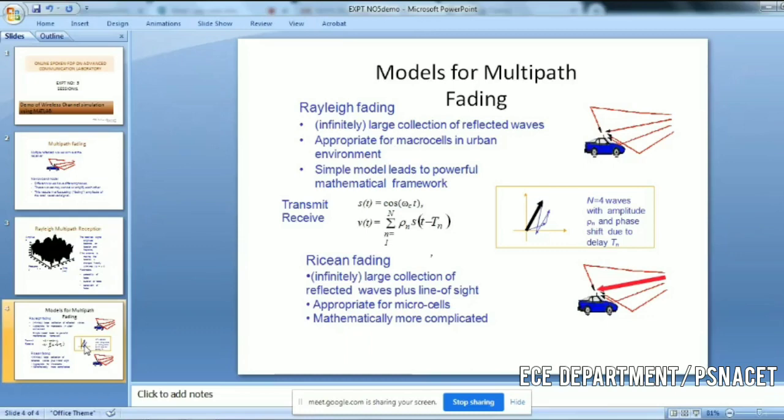This one is complicated. Rician fading is more complicated. It has to process both reflected waves and the line of sight. But Rayleigh considers only the reflected waves, the non-line-of-sight path only.